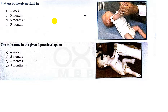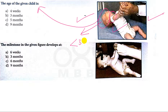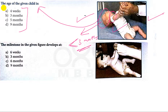Now let's talk about some important questions related to milestones. If in the question this picture is given, what is the age of the child? In this picture you can see both head and neck are not in the control of the baby. That is why the age of the baby should be less than three months of age.